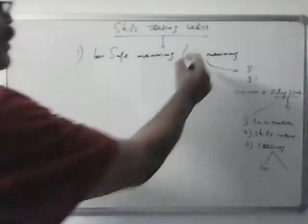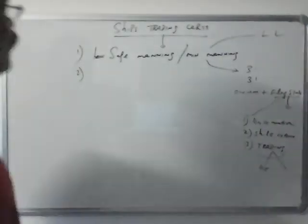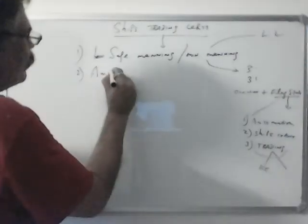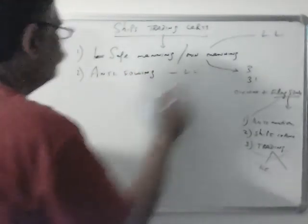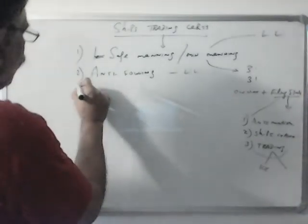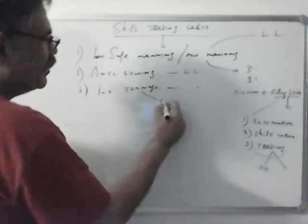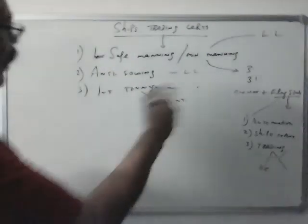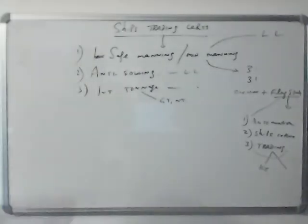Now, safe manning certificate expiry is lifelong, unless the ship changes trading pattern. Second is anti-fouling certificate, which is also lifelong. Then international tonnage certificate is also lifelong. This gives gross tonnage and net tonnage of the ship. Unless the ship is modified and the construction changes, these remain valid. Then a new certificate is issued.